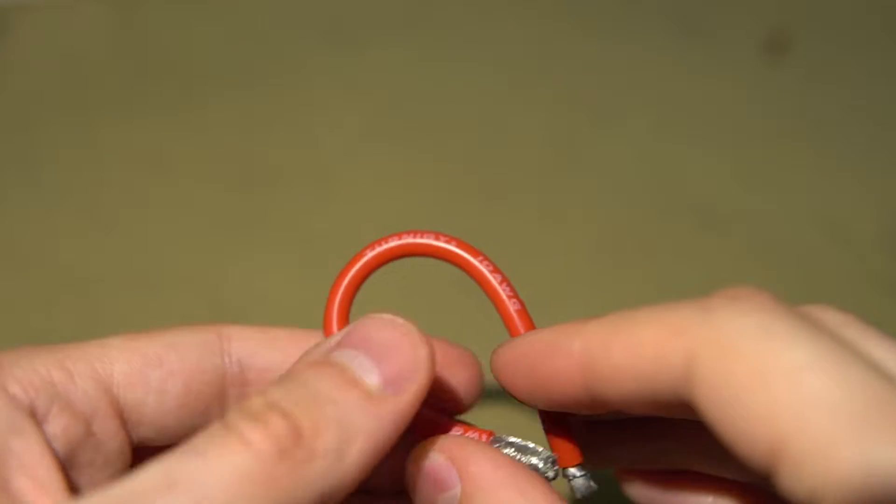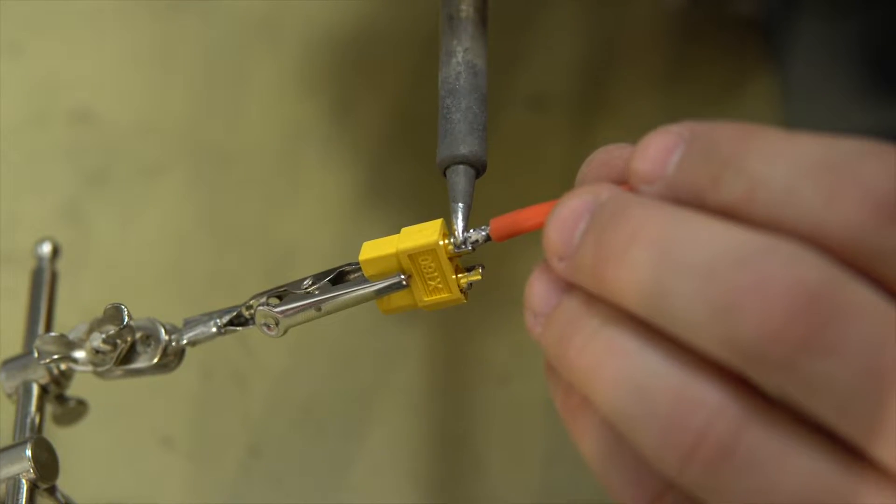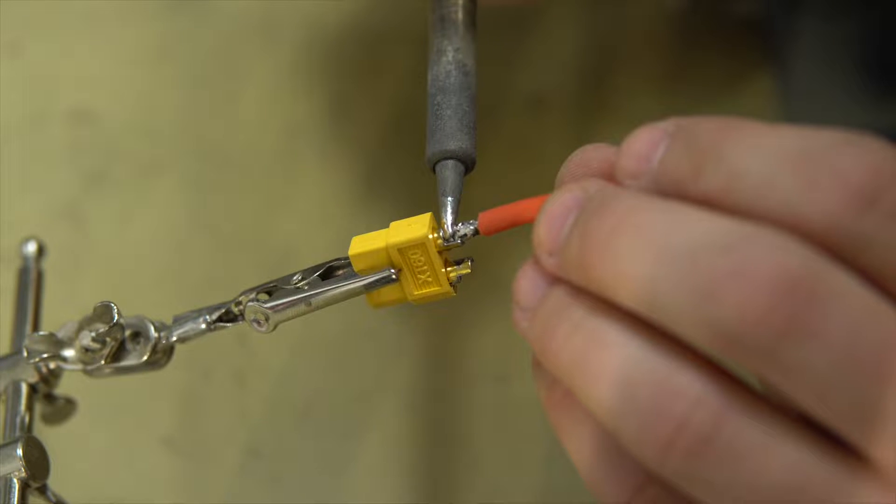The silicon itself can handle 200 degrees celsius, which makes it easy to solder without damaging the insulation material.